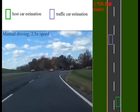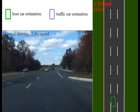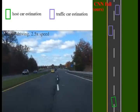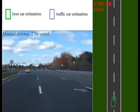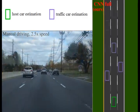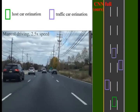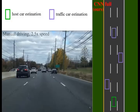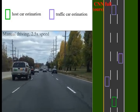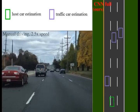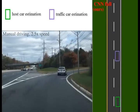Since we do not possess the ground truth, we only show the estimation. Since the system only monitors the current lane and the two adjacent lanes, it uses a two-lane configuration for visualization when driving on leftmost and rightmost lanes, even for a three-lane road.